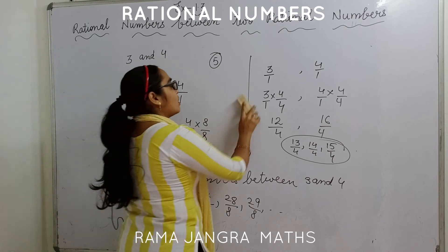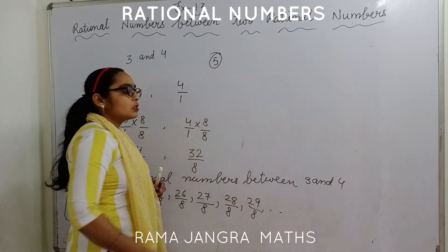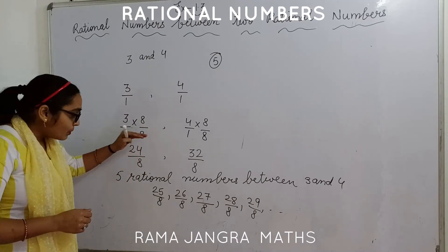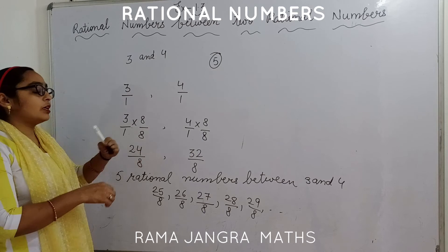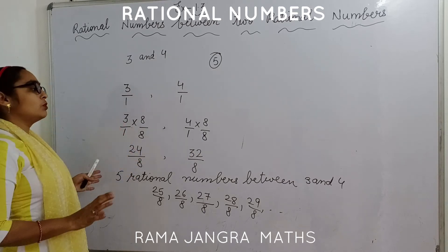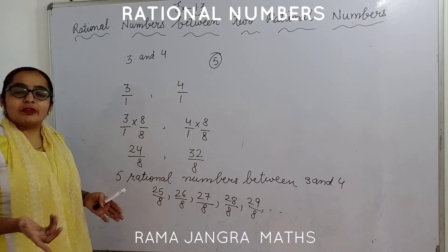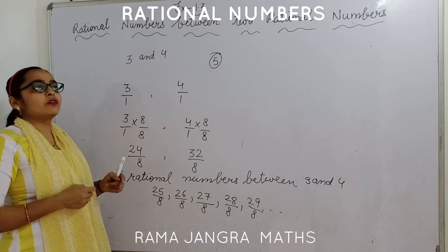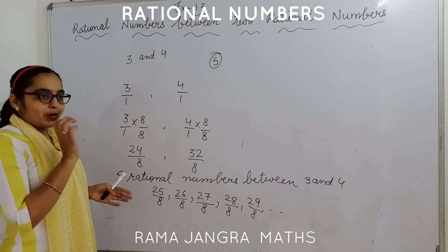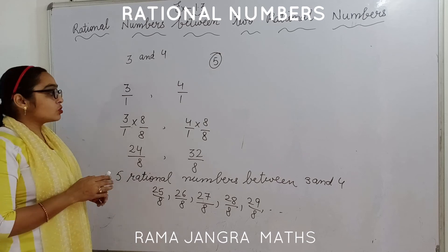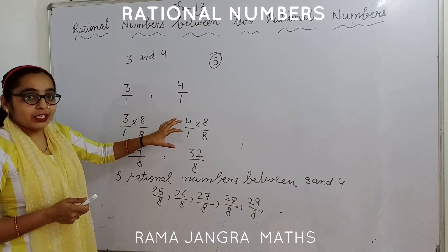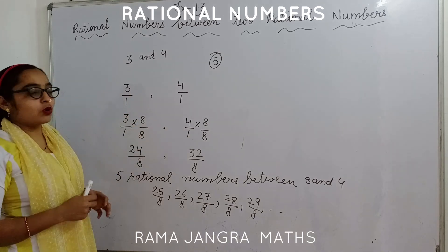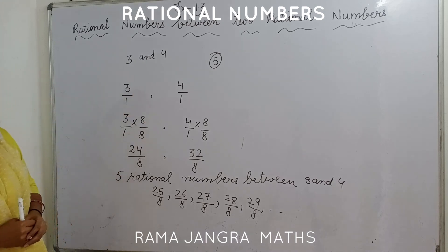As I said in the beginning, there are infinite rational numbers between two rational numbers. You can multiply with 8, 10, 20, 100, or 1000 — any number. So we can get different types of numbers. In these questions your answer may be different from your partner or friend, because someone might multiply by 8 and someone else by 10. It is not necessary that your answer should match with your friend's. I hope this question is clear to all.